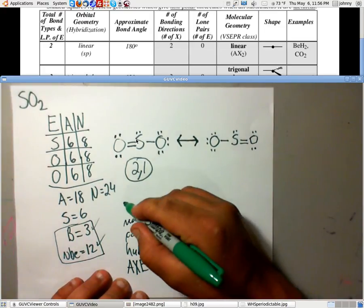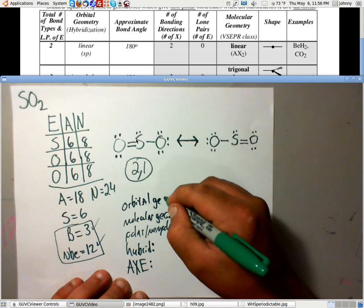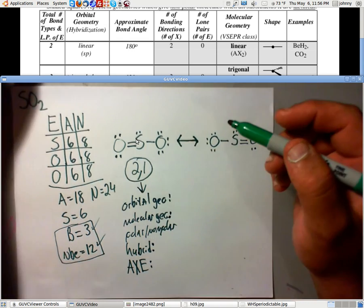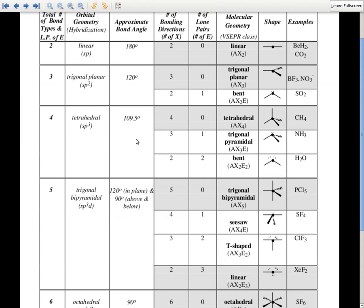And we need to know orbital geometry. I hope that's all. Now, once again, look up 2-1. That will tell you this. 2-1, once again, is bent on the molecular geometry. Once again, its AX notation is AX2E. Hybridization, SP2.